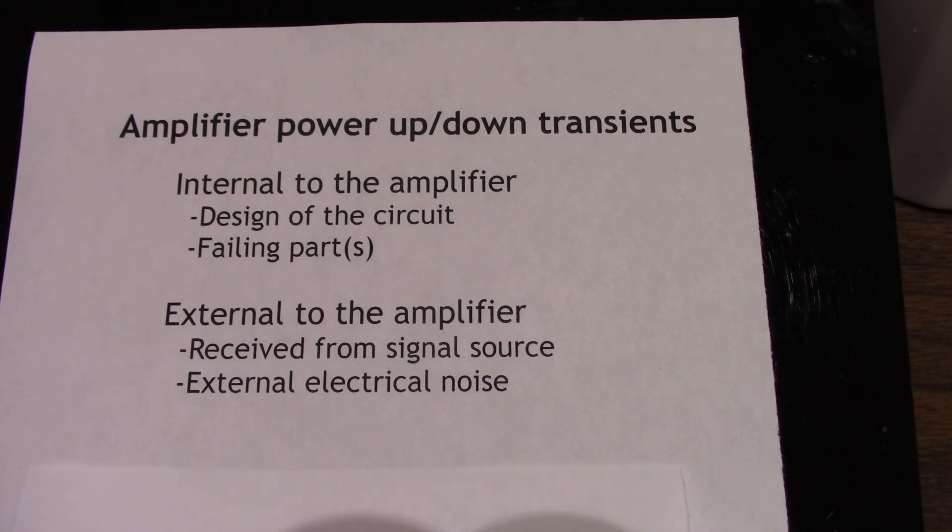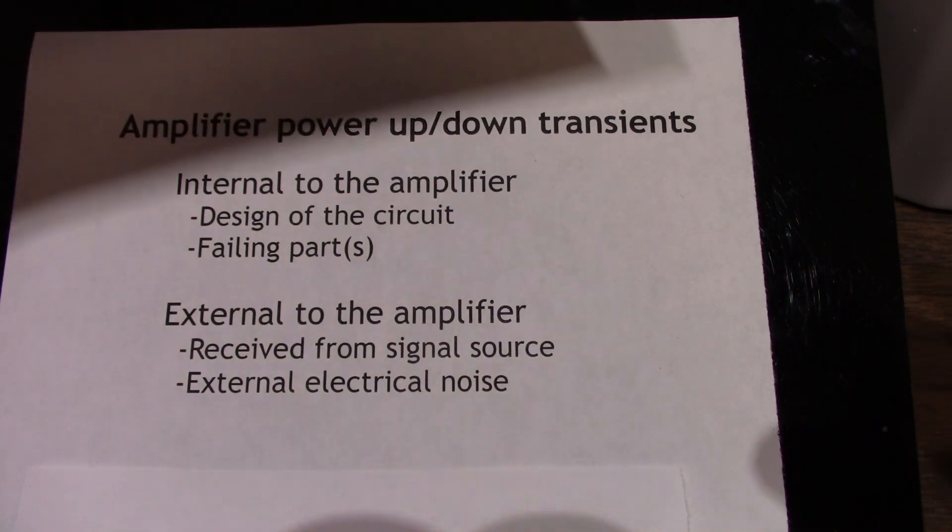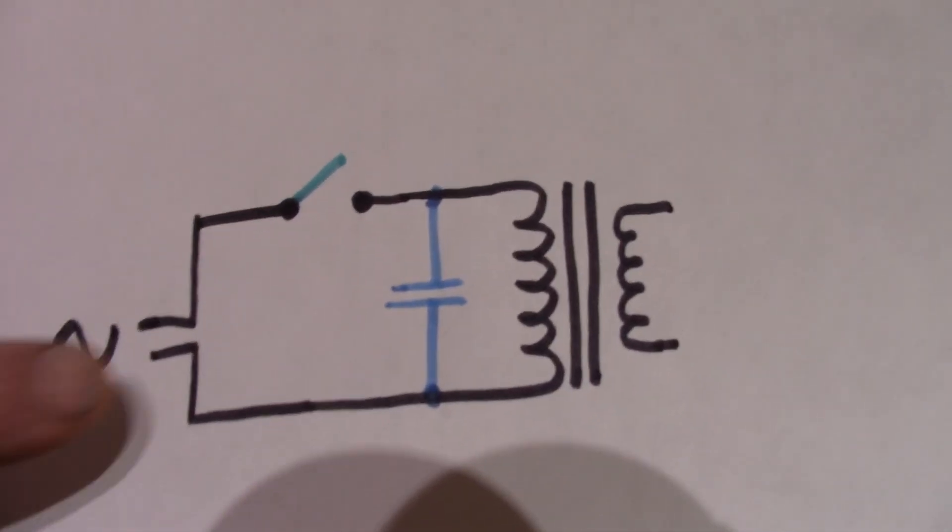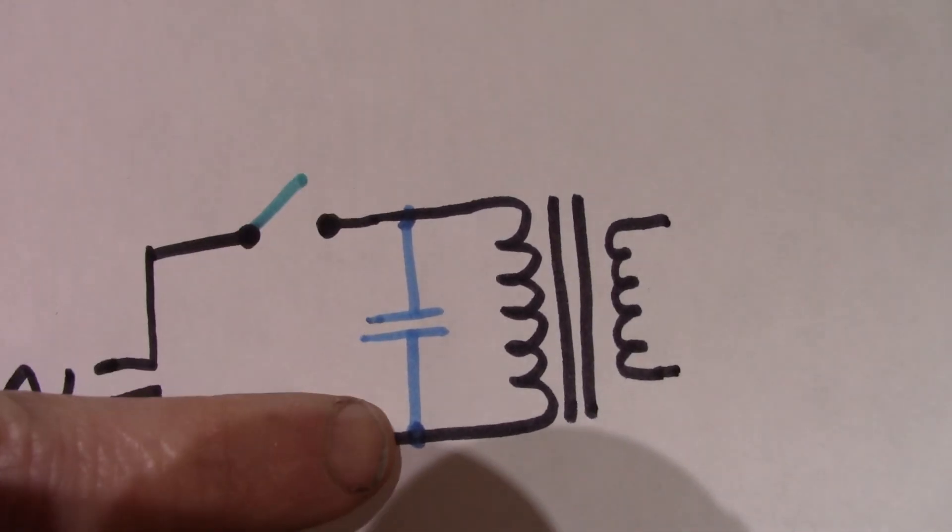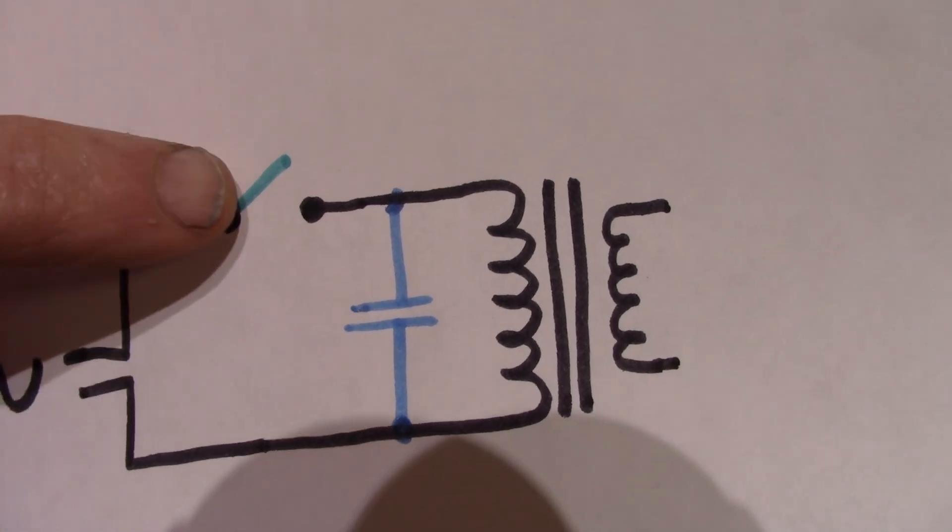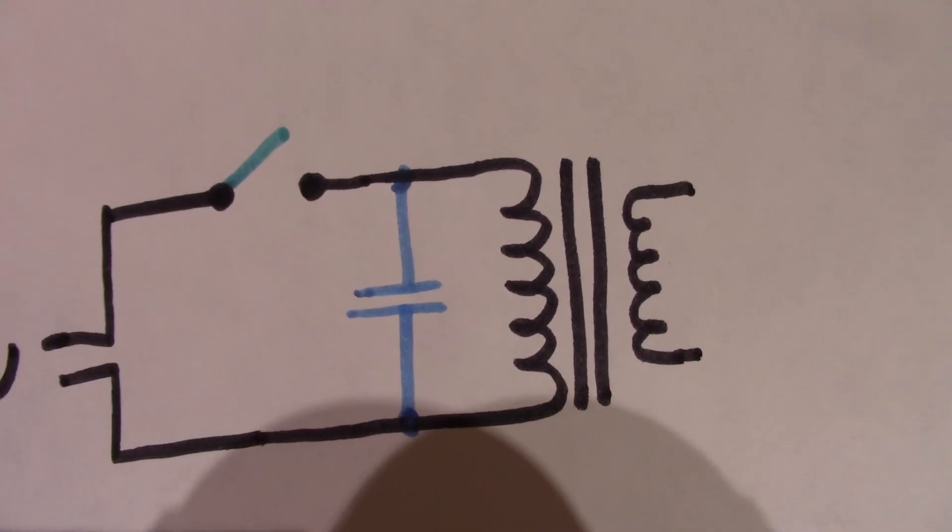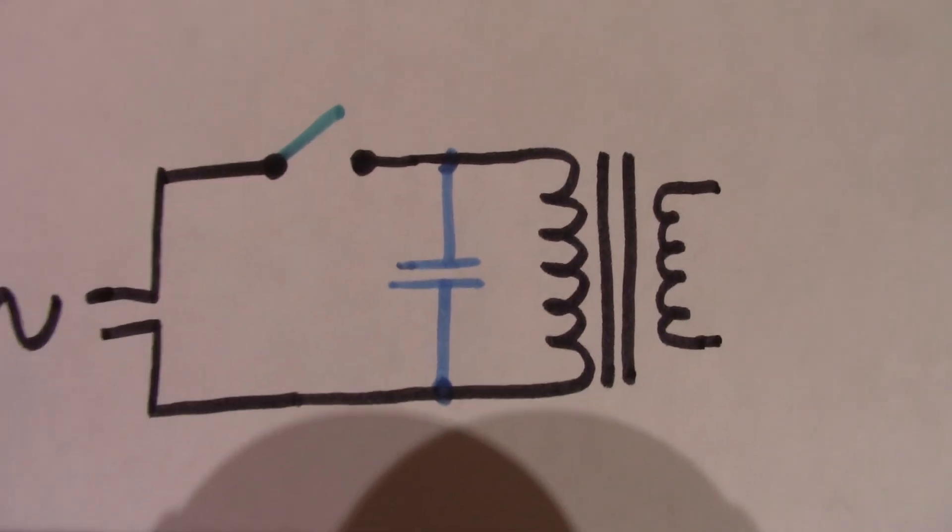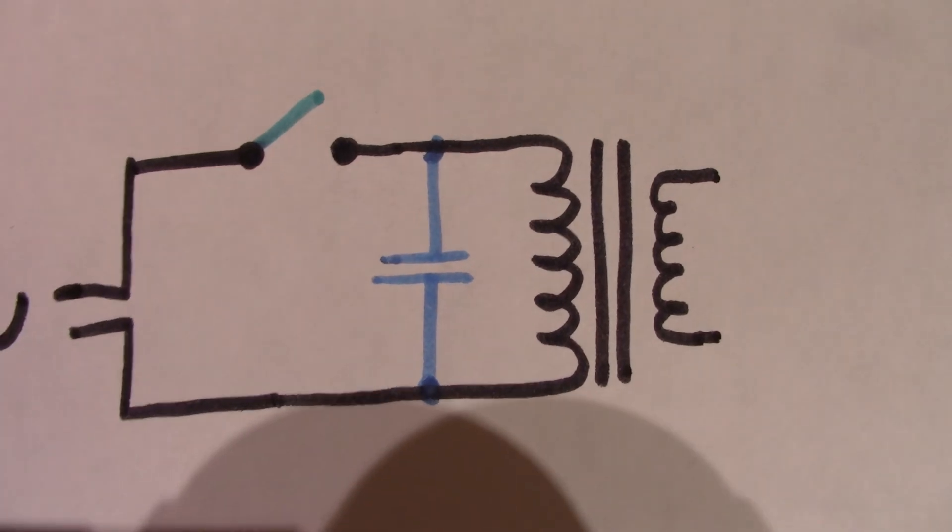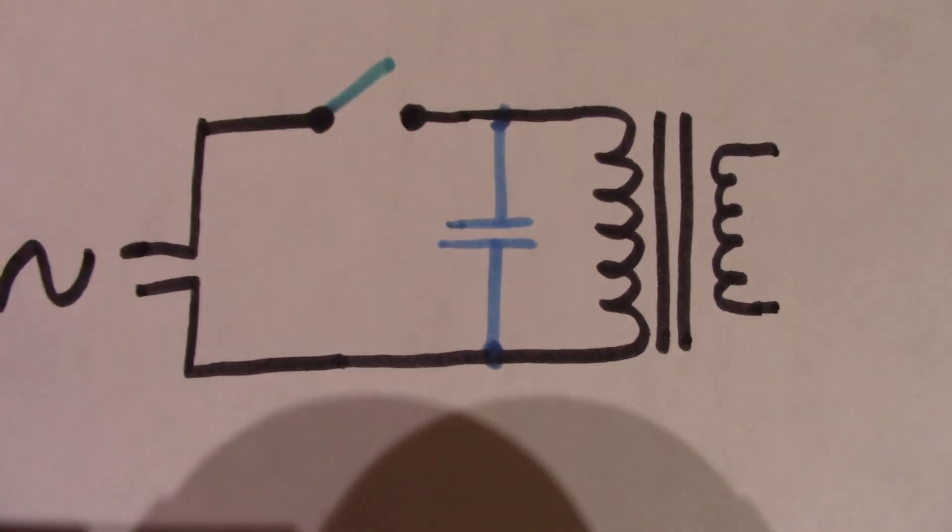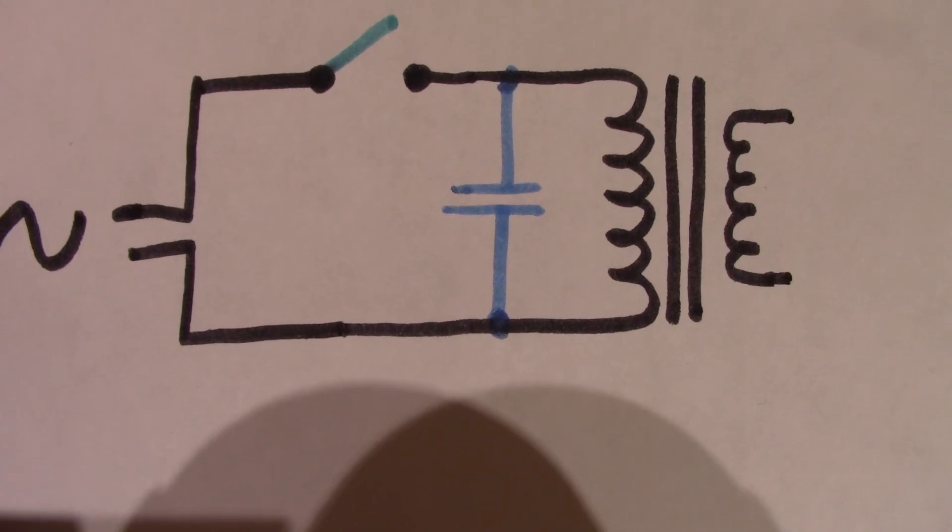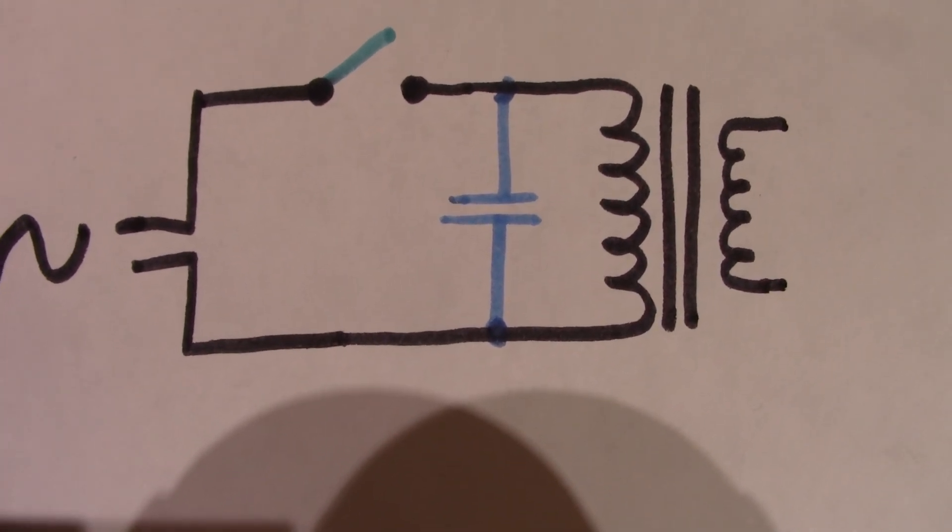Now, the transformer-operated device or even the amplifier itself should have some sort of a suppression device, and it could be as simple as an across-the-line capacitor. So when a switch is open, it helps absorb the noise created from the spark. And these capacitors are known to fail, so you might want to check those. A lot of devices don't include one, and you might want to put one in.